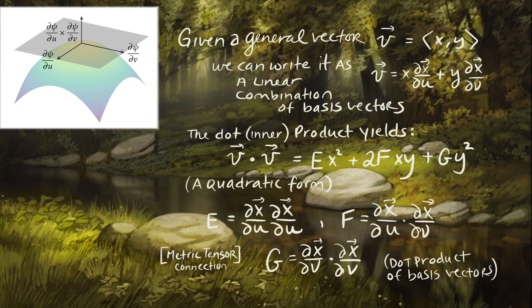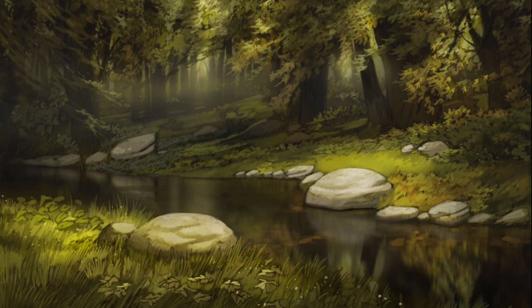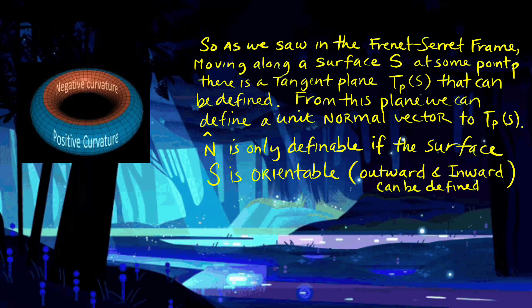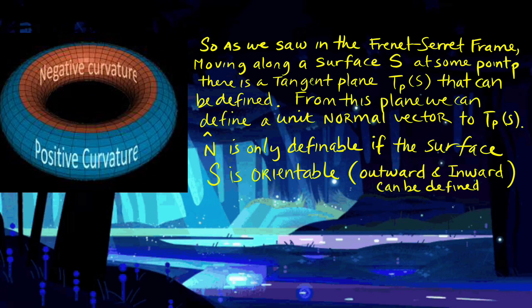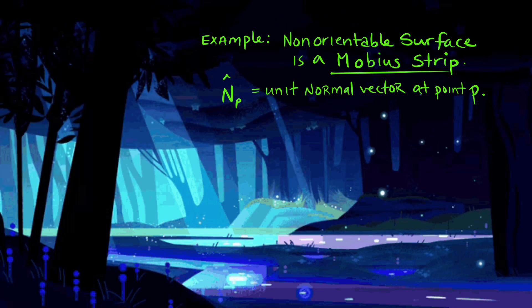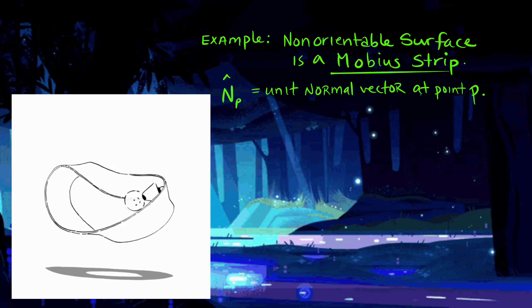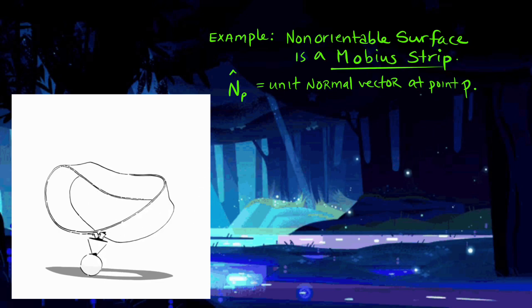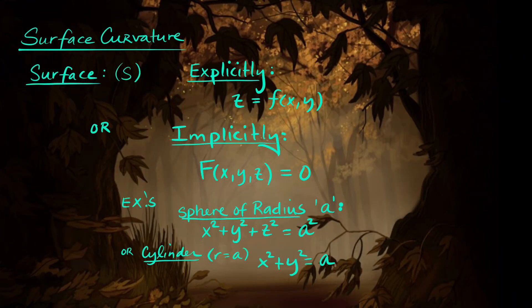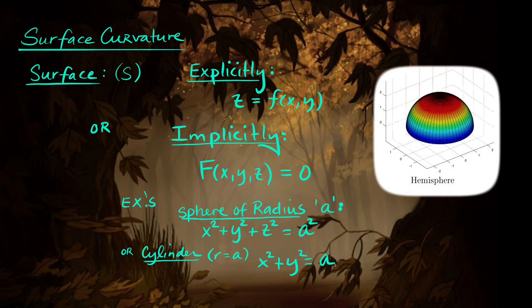So far everything we have done is extrinsic geometry, using vectors in three dimensions to define things. We can only define normal vectors on a surface if the surface S is orientable — in fact those two things go hand in hand. Orientation simply means we can define an inward and an outward direction on a surface. For example, a Möbius strip is a one-sided surface, so it is hard to define outward and inward for it.